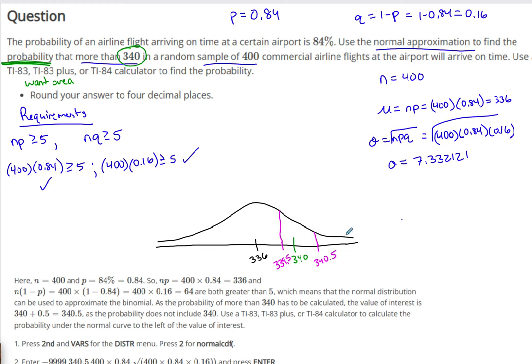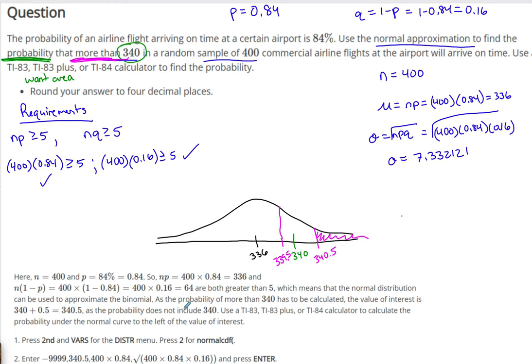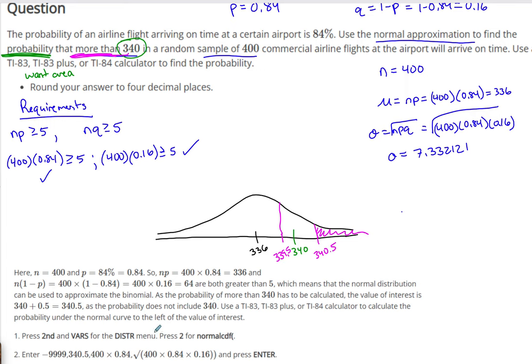I want area. I have to figure out where the area is located. Is it to the right of 340? Is it to the right of 339.5? Is it to the left of 339.5? Is it to the left of 340.5? Where is the area? More than. More than 340. So, you know, more than is always to the right, but now the question is, do I go to the right of 340.5, or do I go to the right of 339.5? So I have to ask the question as to whether I'm including 340 or not. And because it says more than 340, that means I'm not including 340, which means I go to the right of 340.5. So I want to read to you what this says. As the probability of more than 340 has to be calculated, the value of interest is 340 plus 0.5, 340.5, as the probability does not include 340. So they're saying the same thing I just said, maybe just without the nice visual.